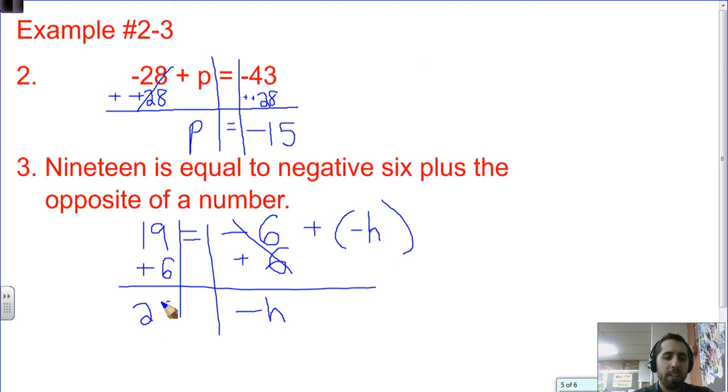If negative H, or the opposite of H, is 25, what is H? Well, if the opposite of H is 25, the opposite of what number is positive 25? Negative 25. Then positive H would be negative 25. Make sure you understand that. Maybe reread the lesson. If 25 is the opposite of H, then H is the opposite of 25, or negative 25.